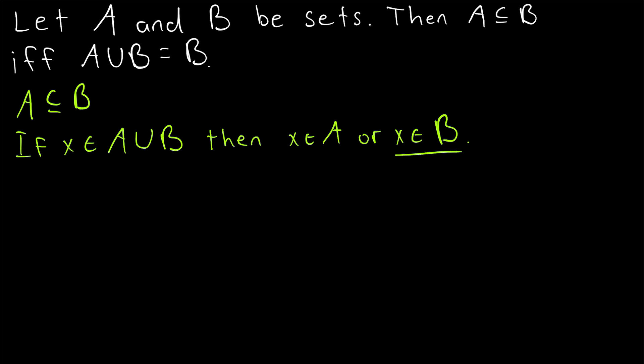If x is an element of B, that's great, we can pretty much stop there. If x is an element of A, then we can also conclude that x is an element of B because A is a subset of B. Thus, either way, x is an element of B, so this shows that any element of A union B must also be in the set B, and therefore A union B is a subset of B.